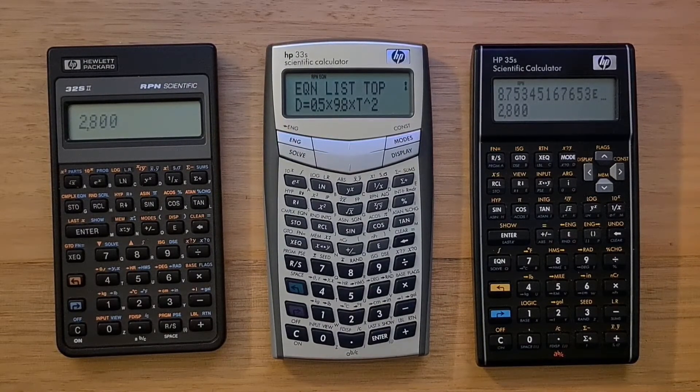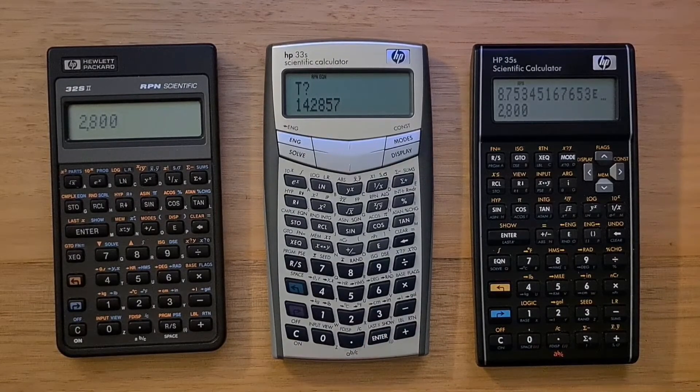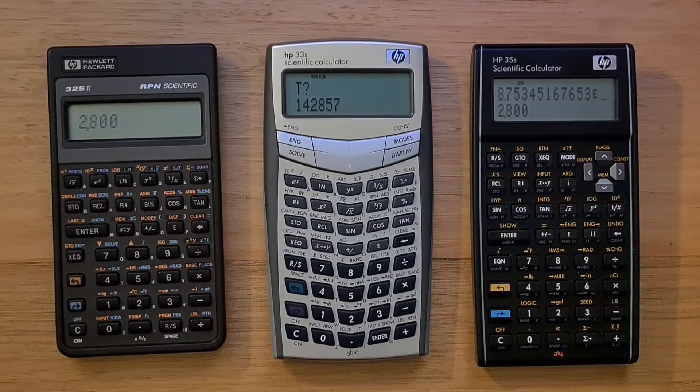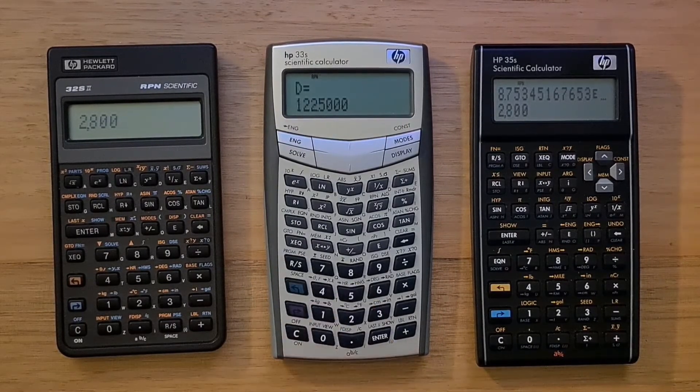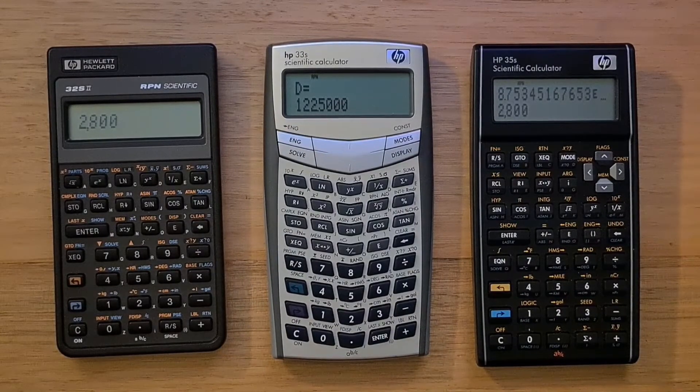Now to evaluate the equation, I can just hit enter. The calculator prompts for the time t. I can enter five seconds. And the distance fallen is 122.5 meters.